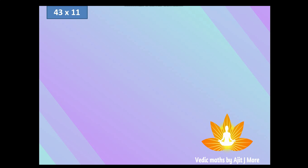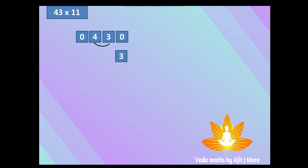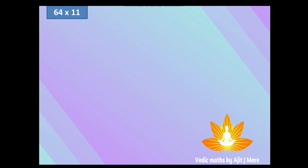Let's see one more example: 43×11. Number of ones is two, so we put one zero on both sides and get 0 4 3 0. Go on adding consecutive digits from the right: 0+3=3, 3+4=7, 4+0=4. That's all — the answer is 473. You can tally it with a calculator — the answer is going to be the same.